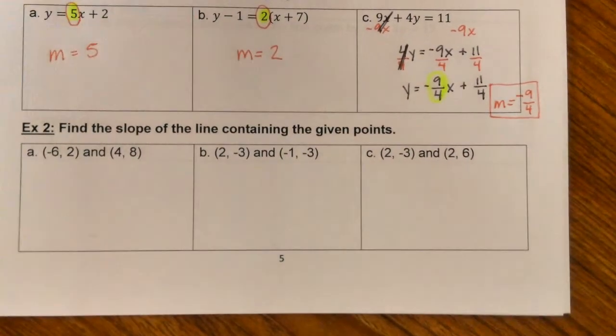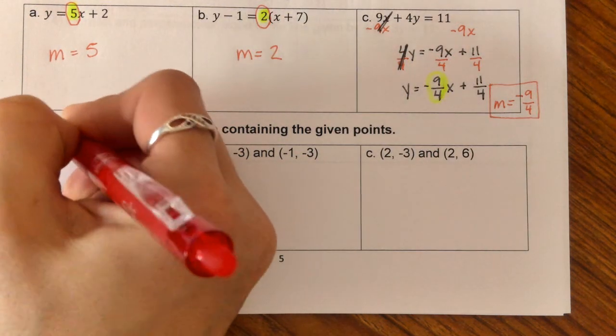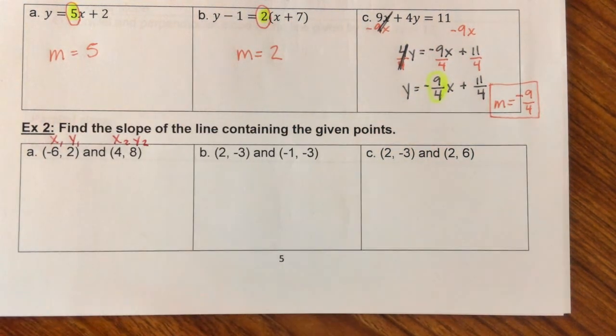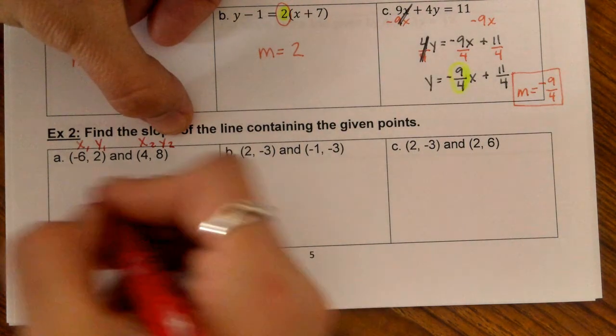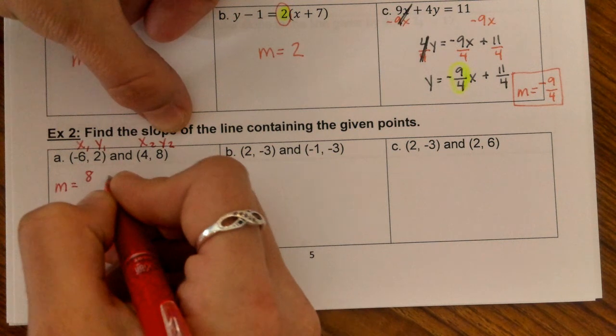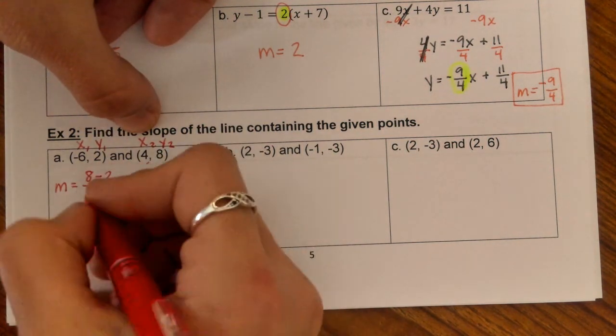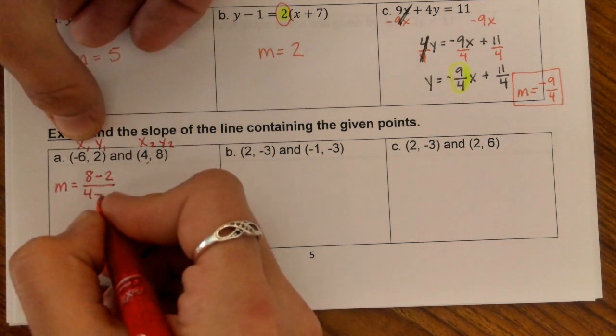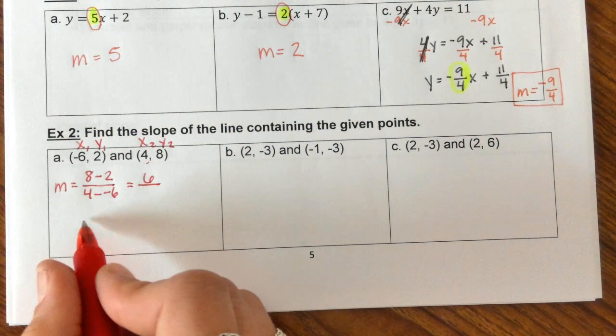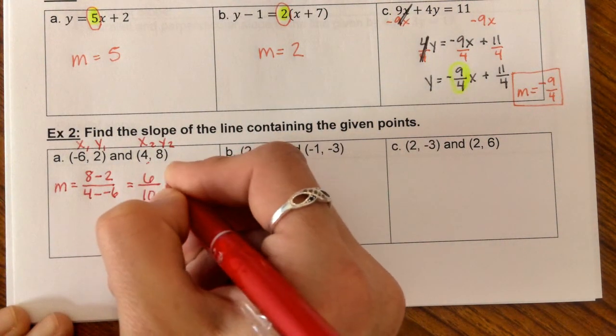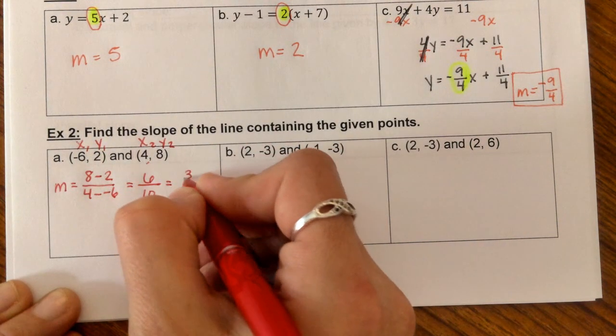We're going to use our slope formula, Y2 minus Y1 over X2 minus X1, to find the slope with two given points. First, let's label X1, Y1, X2, Y2. M equals Y2, which is 8, minus Y1, which is 2, over X2, which is 4, minus X1, which is negative 6. When we solve this, 8 minus 2 is 6, 4 minus a negative 6 turns into 4 plus 6, giving us 10. We always want to simplify these fractions. 6 and 10 can both be divided by 2, giving us 3 fifths as our slope.